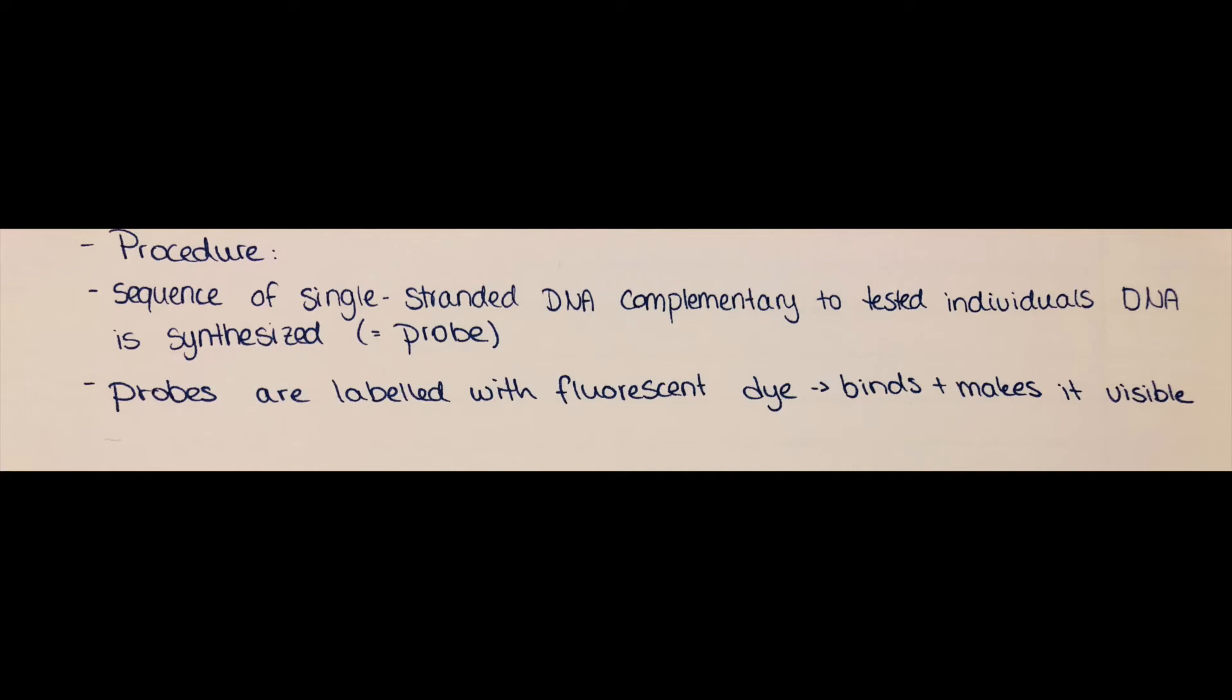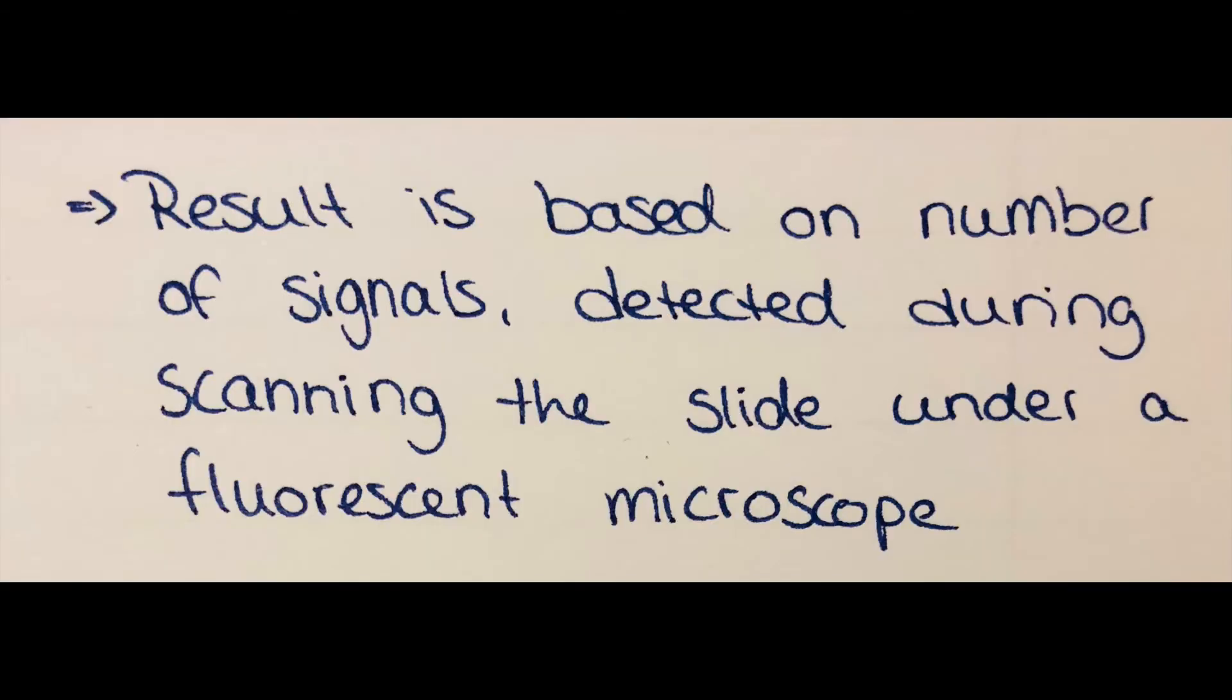So when this single-stranded DNA will bind to its target single-stranded DNA within the genome of the to-be-tested individual, then they create a double strand. And this can be seen under a fluorescent microscope once the slide is being scanned. And then depending on the number of the signals which can be detected during the scanning, evaluations can be made whether or not the testing was successful.